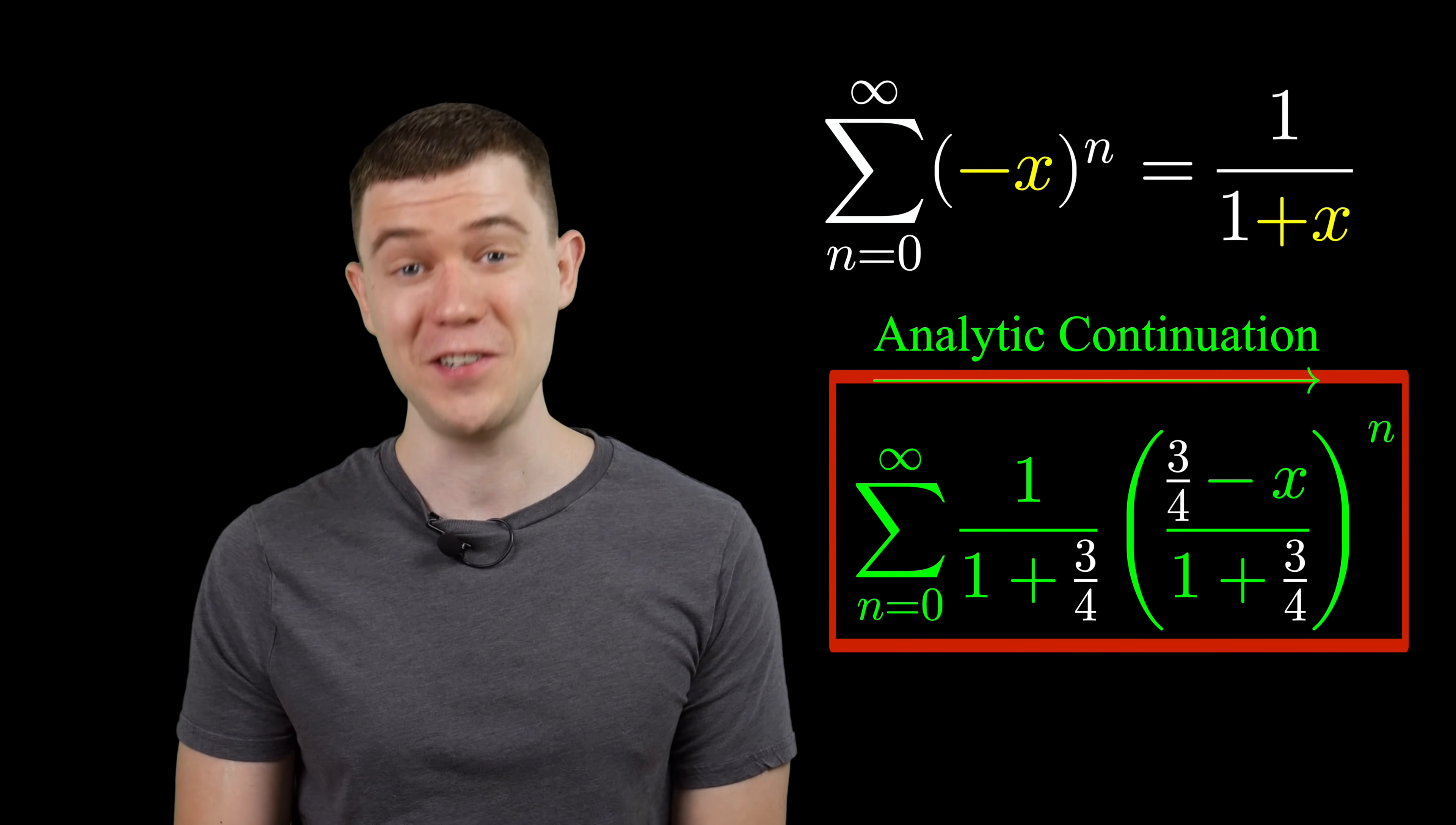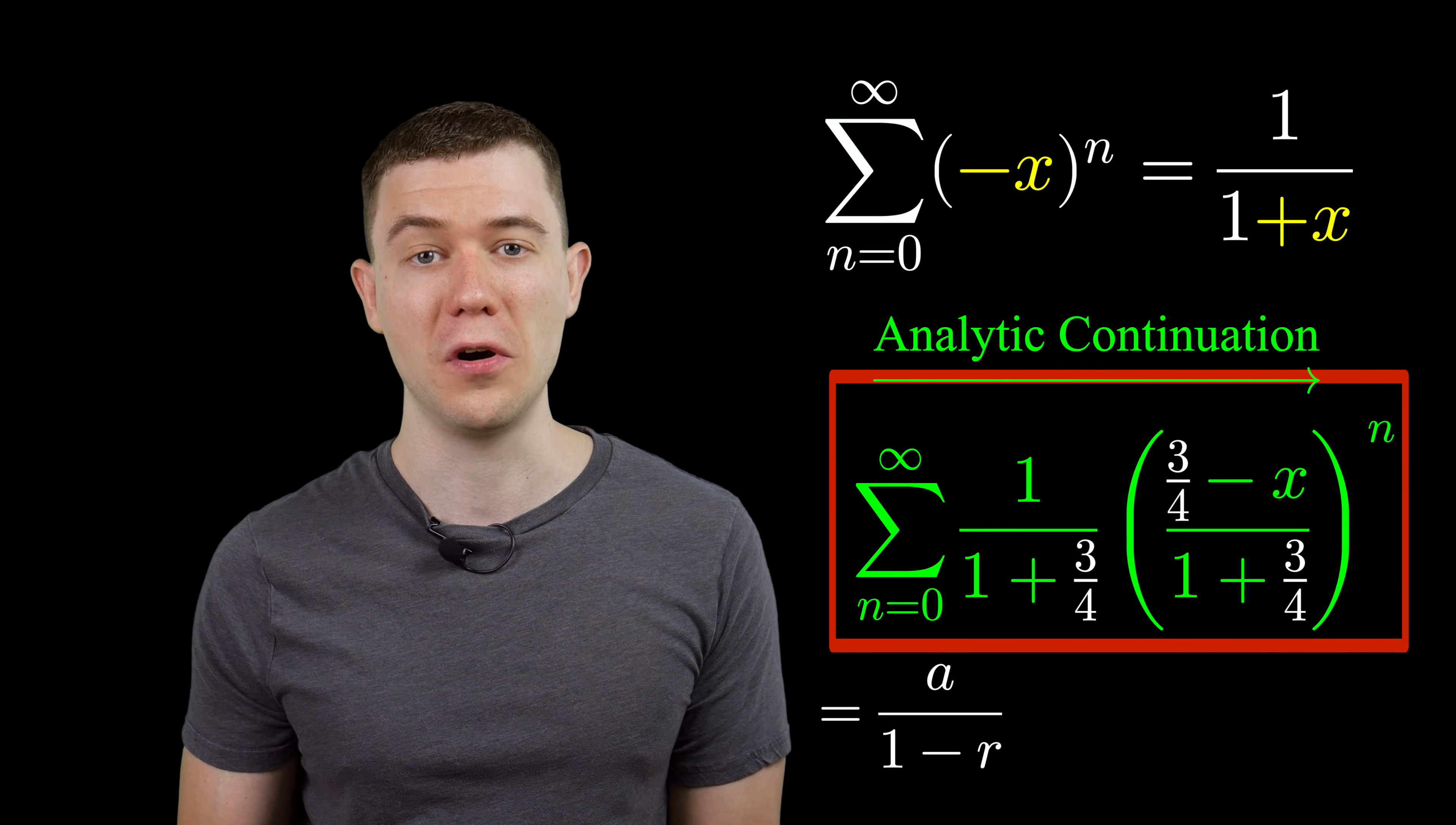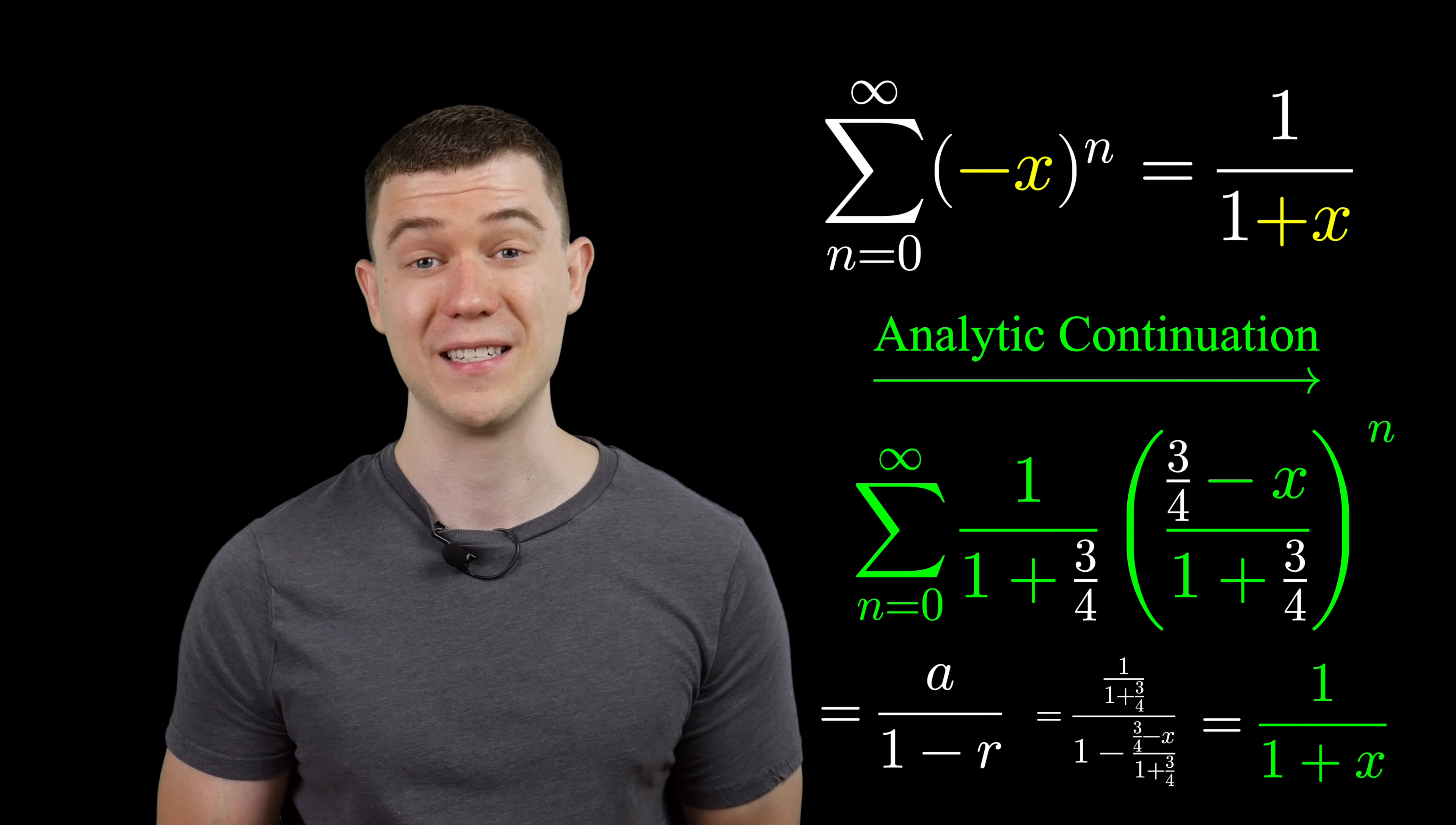Now the fun part. This Taylor series is a geometric series and we know how to sum it. The way we sum geometric series is a over one minus r. A is the first term of the series. R is that common ratio. Let's just substitute these values in. A little bit of algebraic simplification. And what do you know? We get one over one plus x, which we should.